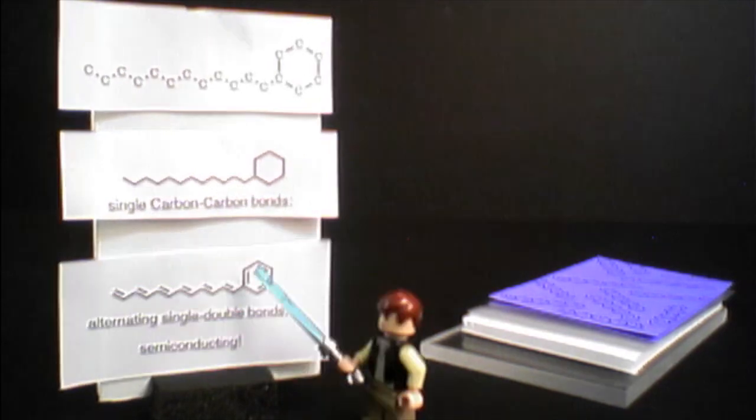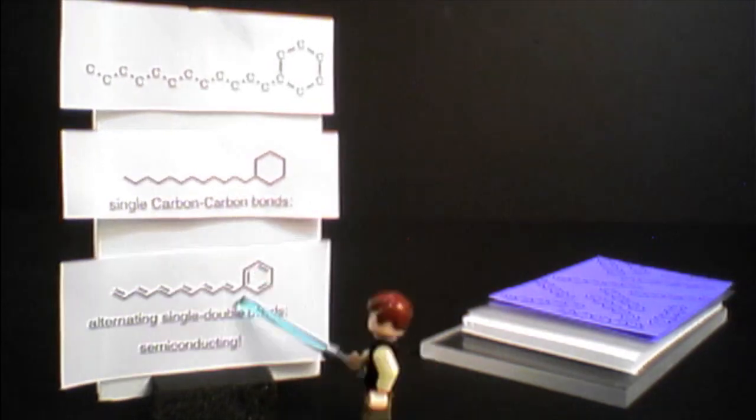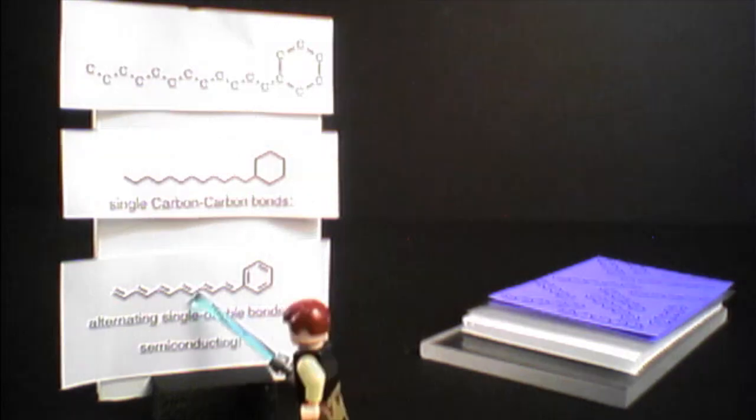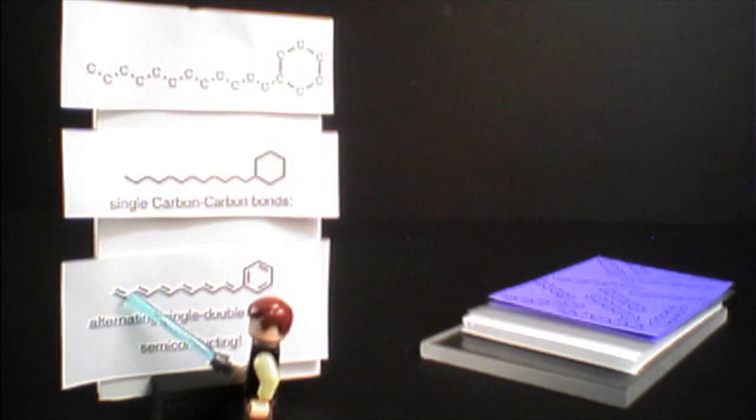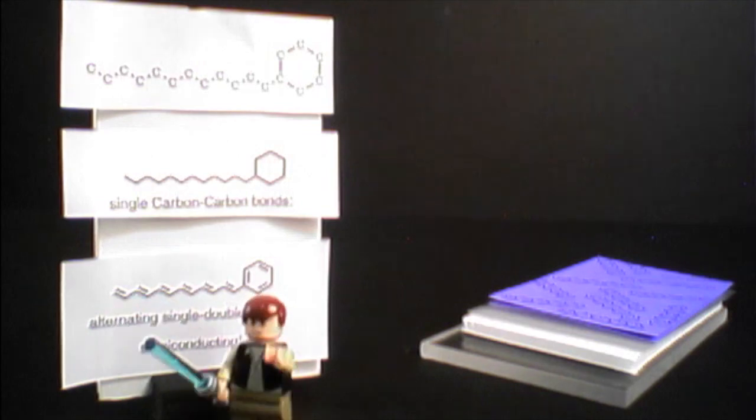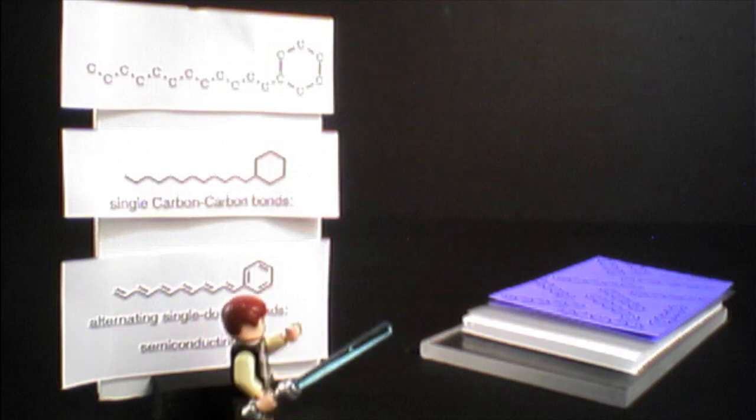Scientists are developing molecules that have a property called conjugation. Carbon atoms are linked together in an alternating pattern of single and double bonds. When these molecules absorb light, the excited electrons in the double bonds can move freely along the molecular backbone and create current. My shampoo sure can't do that.